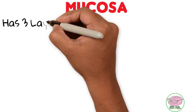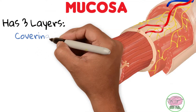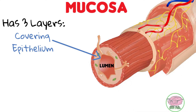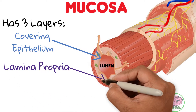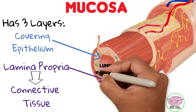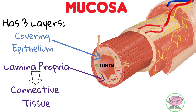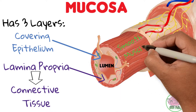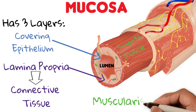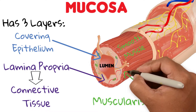The mucosa is made up of three different structures: the covering epithelia that is closest to the lumen, the lamina propria below, made of connective tissue that has blood vessels and lymphatic vessels, and a fine layer of smooth muscle that aids with the movement of the mucosa called the muscularis mucosae.